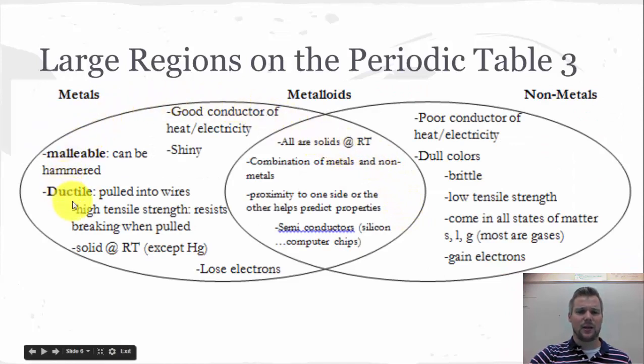So property-wise, the atoms that are on the left-hand side are metals. We already talked about that. So here are some properties of them. They're malleable. They can be hammered into thin sheets, ductile pulled into wires. Most of them are solid at room temperature. They're shiny or lustrous, good conductors of heat. These tend to lose electrons.